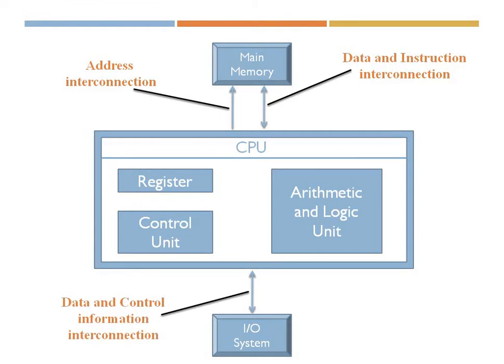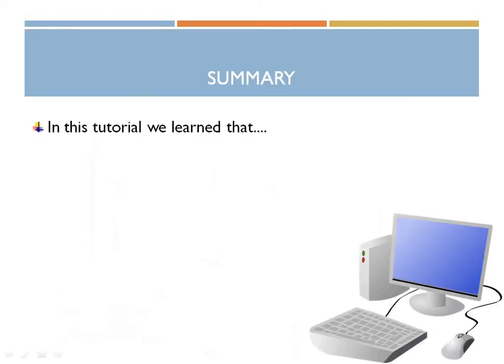The next interconnection is between the I/O and the CPU. This is for sending data and control information. If the CPU has to control the I/O system, or if the I/O needs to send any information or data to the CPU, it makes use of the data and control information interconnection.